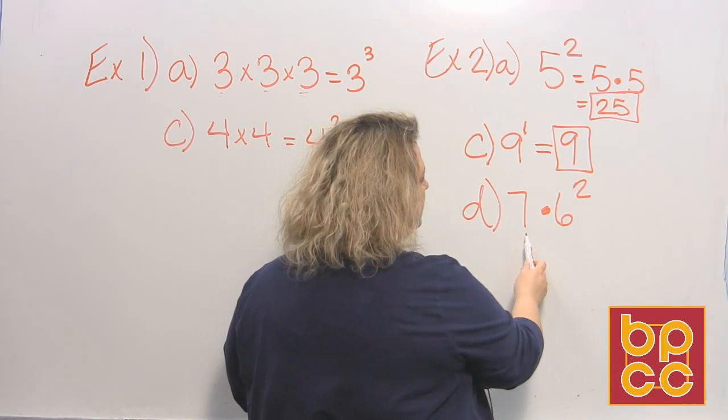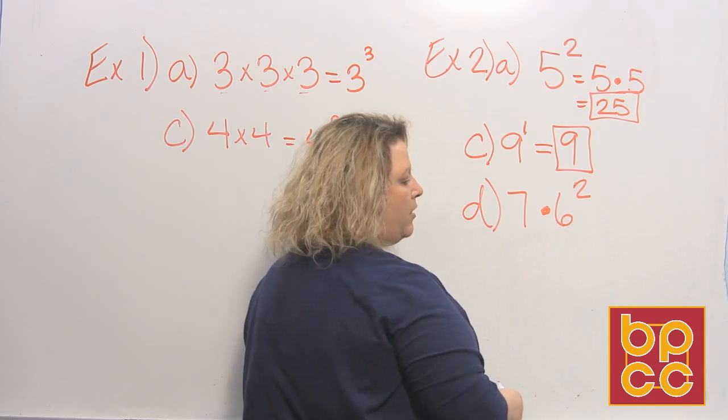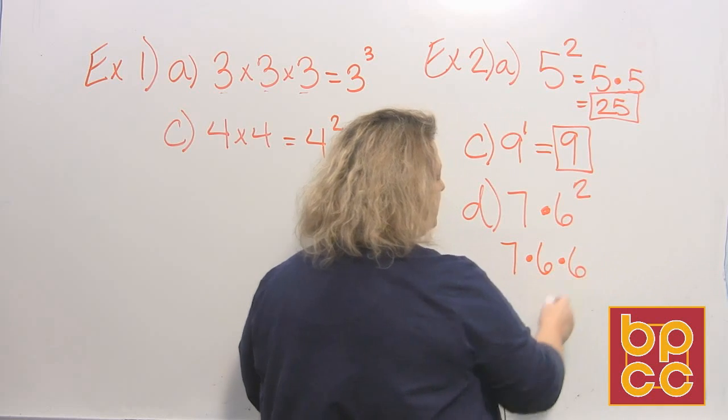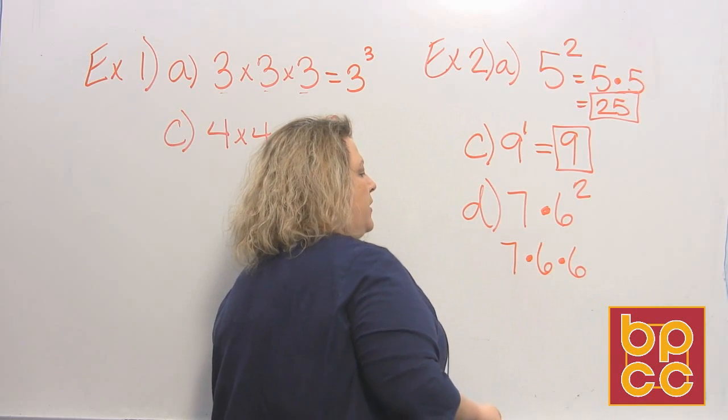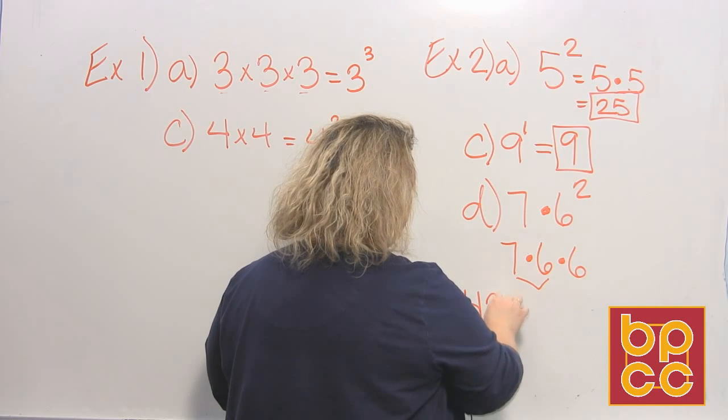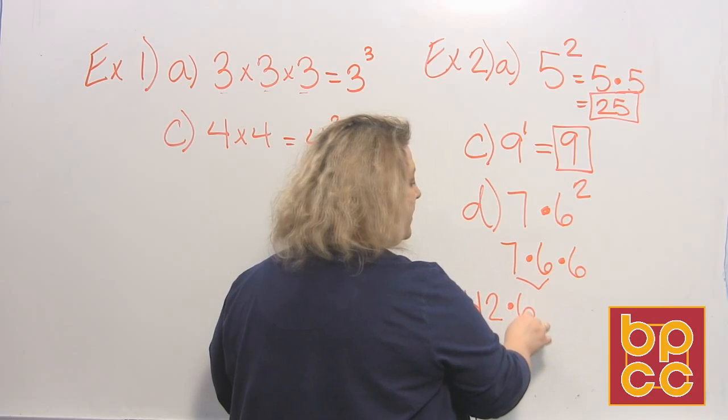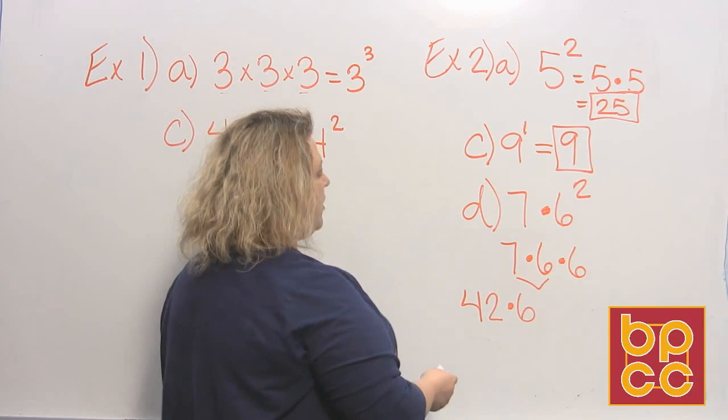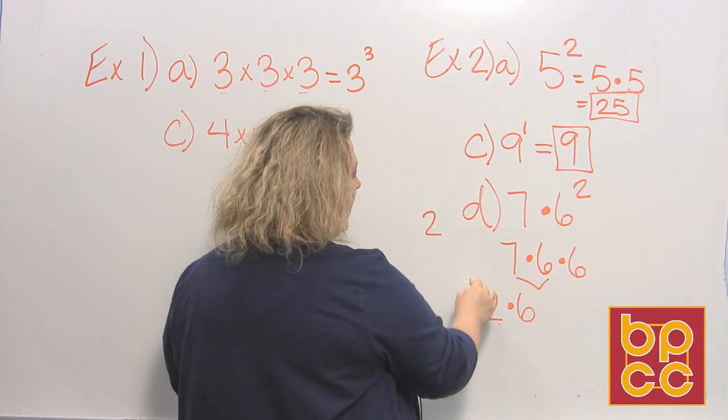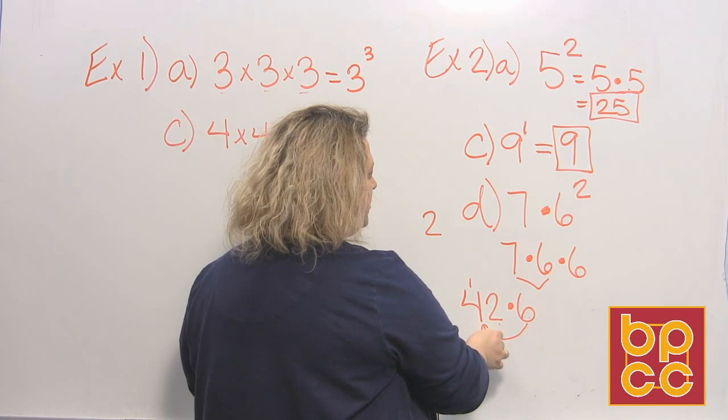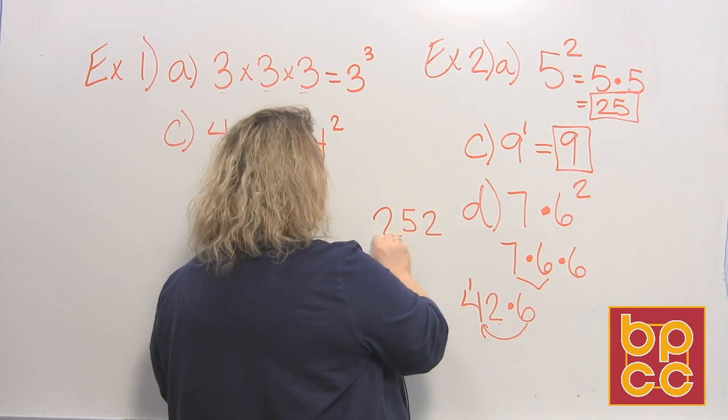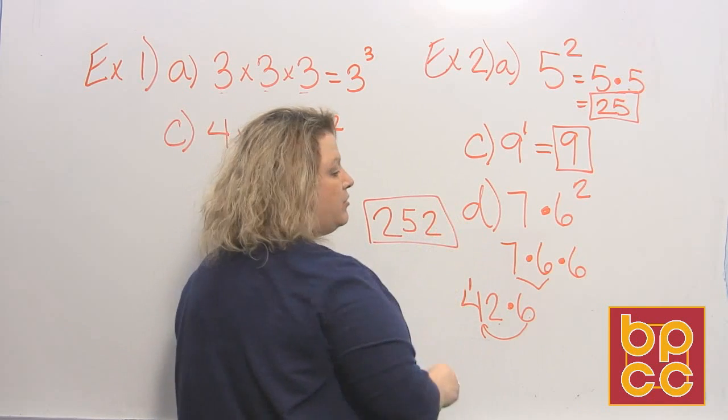Our last one we have is seven times six to the second power. What that really means is seven times six times six. So then you could do your multiplication and do seven times six is forty-two. And then forty-two times six. Remember your multiplication skills from our earlier lesson. Six times two is twelve. And I'm going to write my answer up here so you can see it. And I carry my one. Then six times four is twenty-four. Plus the one I carried is twenty-five. So my final answer for part D would be two hundred fifty-two.